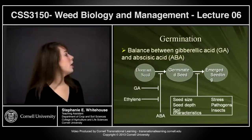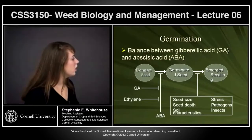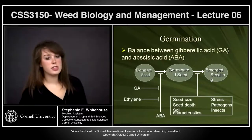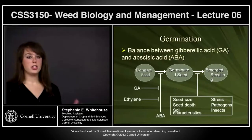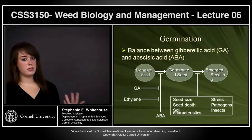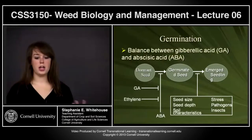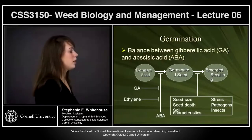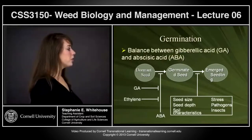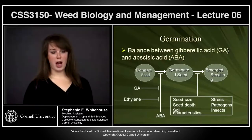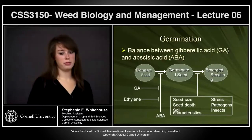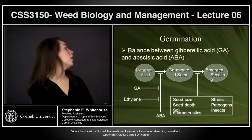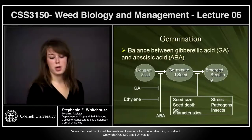After germination begins, factors such as seed size, depth of the seed in the soil profile, soil characteristics — aeration, oxygen content, nitrogen, light availability — all have an effect. Stresses such as pathogens, insects, or lack of nutrients can also prevent the seed from actually emerging.